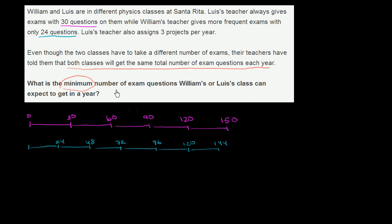But let's see what they're asking us. What is the minimum number of exam questions William's or Luis's class can expect to get in a year? Well, the minimum number is the point at which they've gotten the same number of exam questions, despite the fact that the tests had a different number of items. And you see the point at which they have the same number is at 120. They both can have exactly 120 questions, even though Luis's teacher is giving 30 at a time and William's teacher is giving 24 at a time. So the answer is 120.